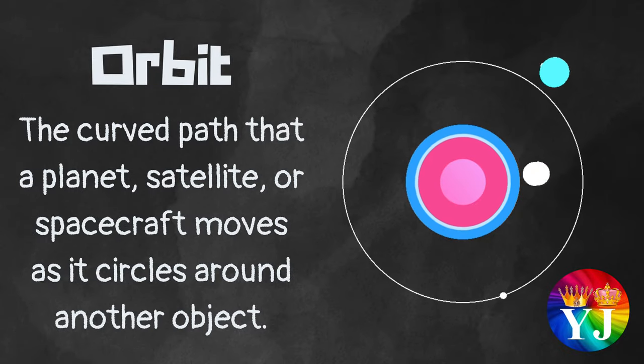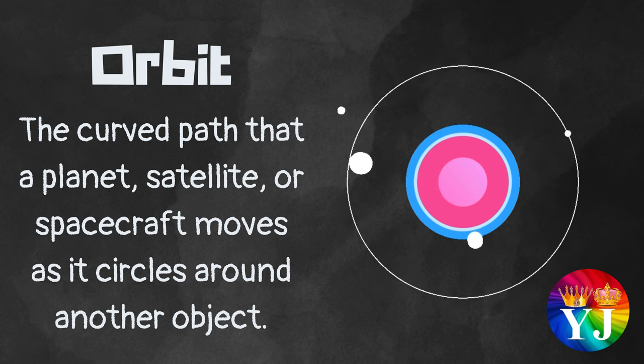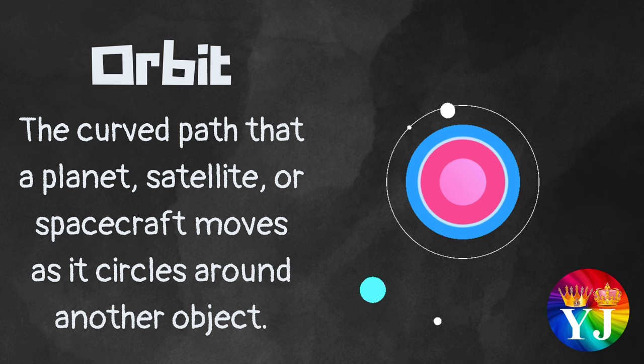Orbit: The curved path that a planet, satellite, or spacecraft moves as it circles around another object.